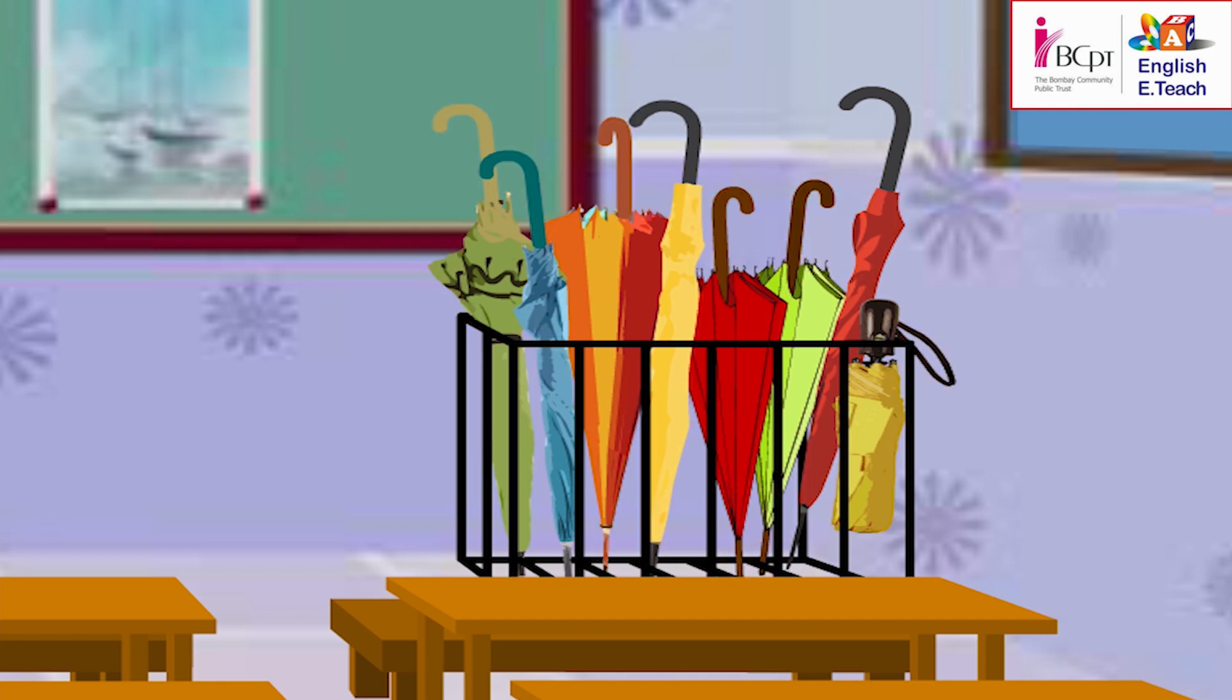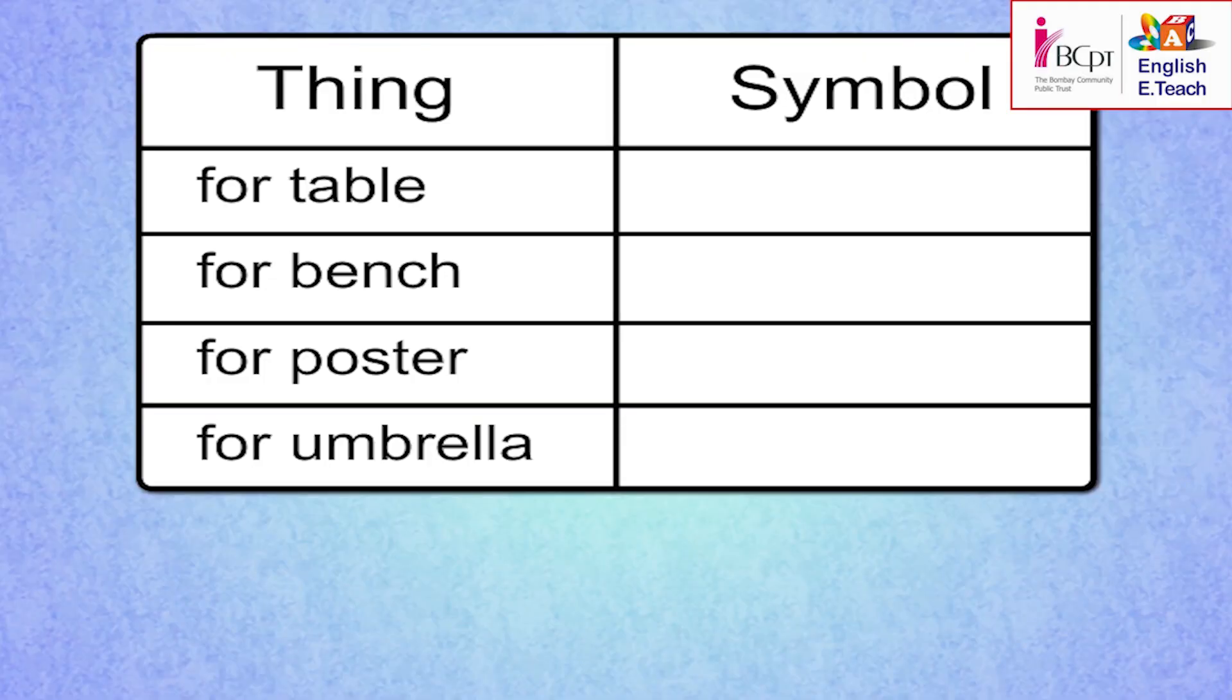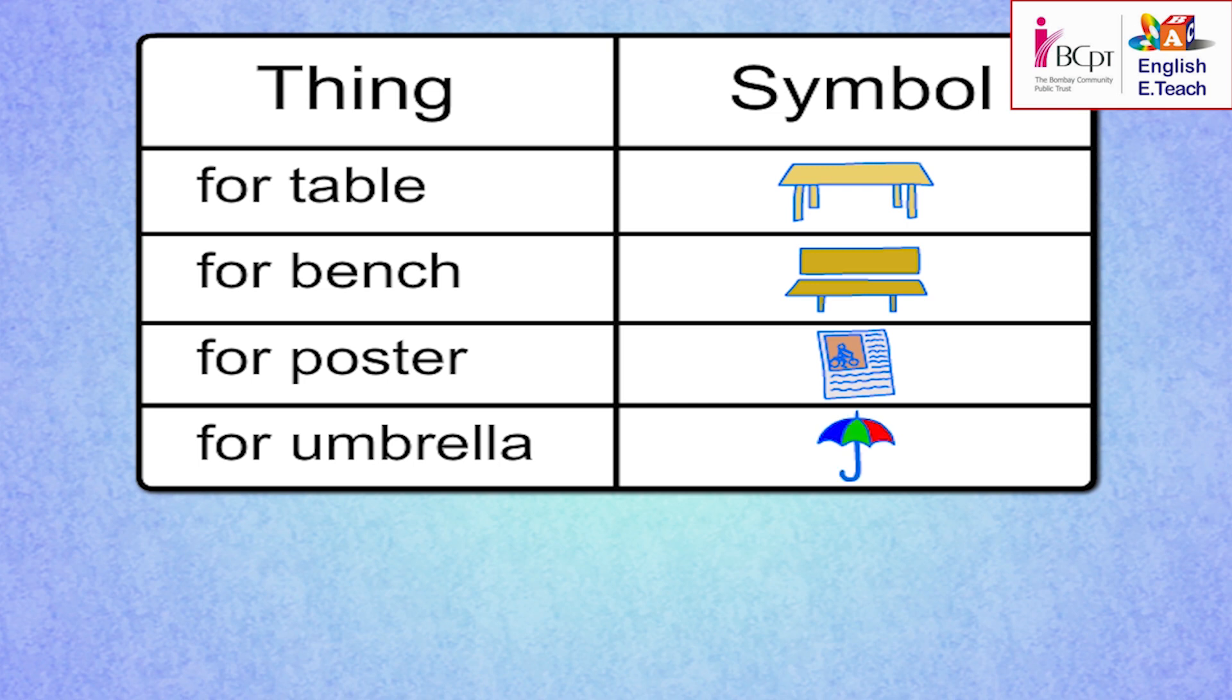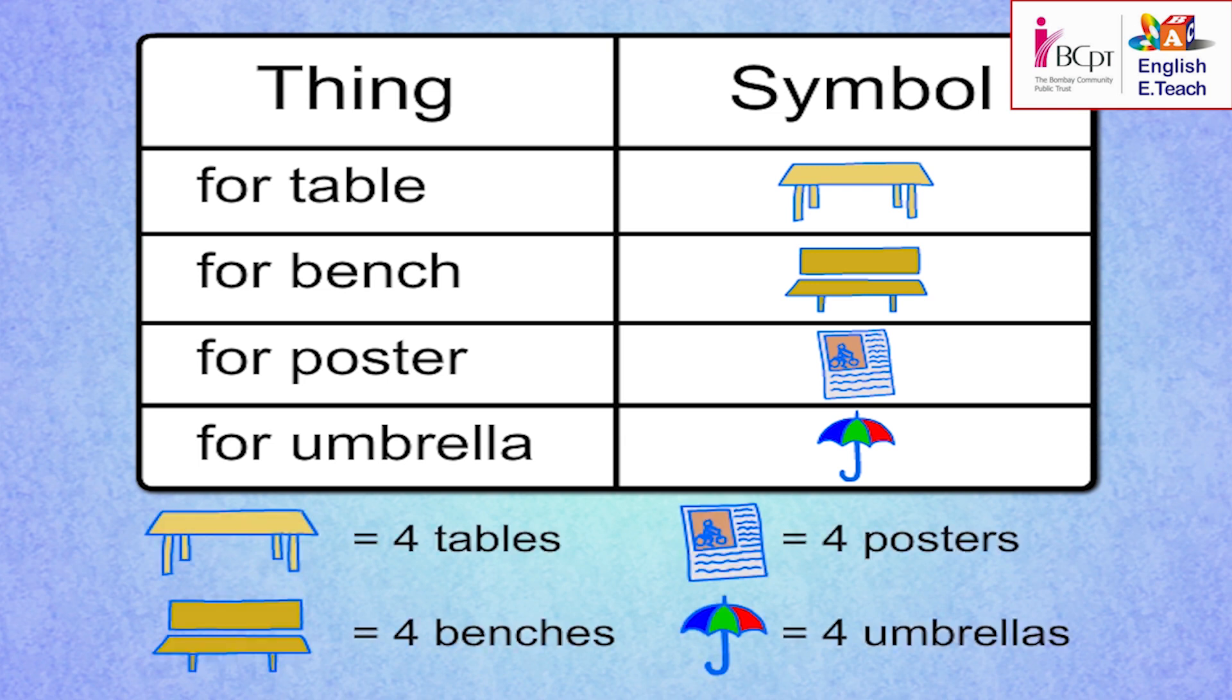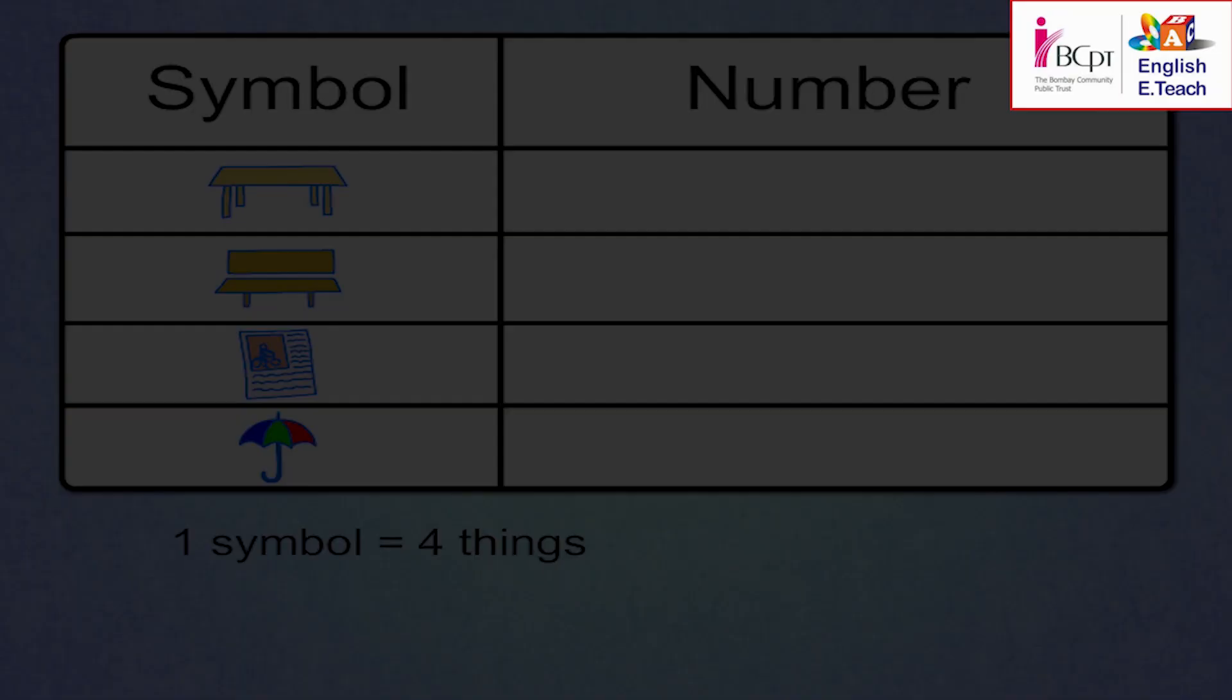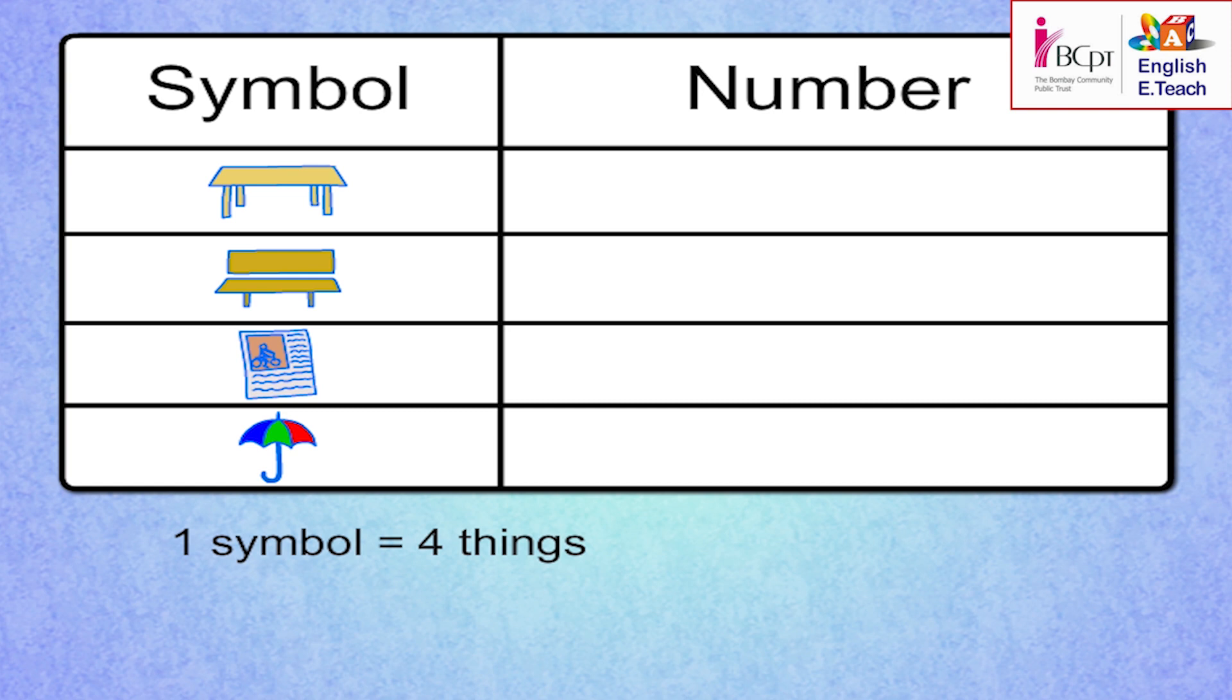Fantastic! Now, let's make the pictogram. I will use Ahmad's symbol for the tables, Priya's for the benches, Nikhil's for the posters, and Jenny's for the umbrella. Let one symbol stand for four things. Let's start.